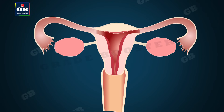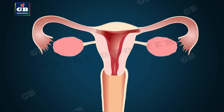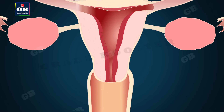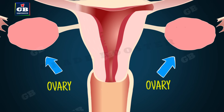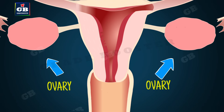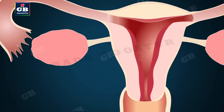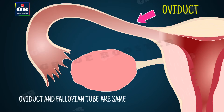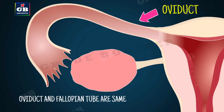Let's see the different parts of the female reproductive system. Ovaries: there are a pair of ovaries in the female reproductive system that contain the immature egg cells. Oviducts: there are two oviducts which unite into an elastic bag-like structure.